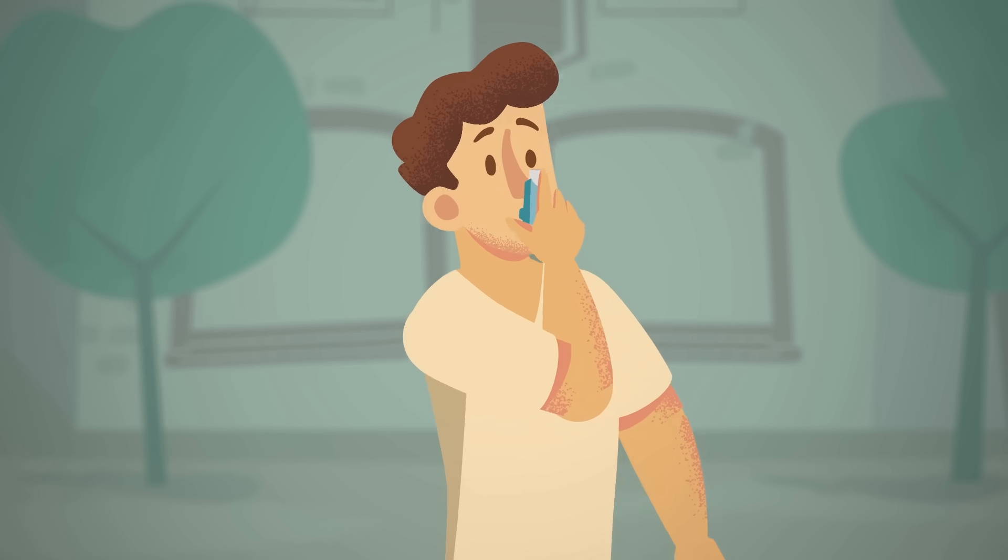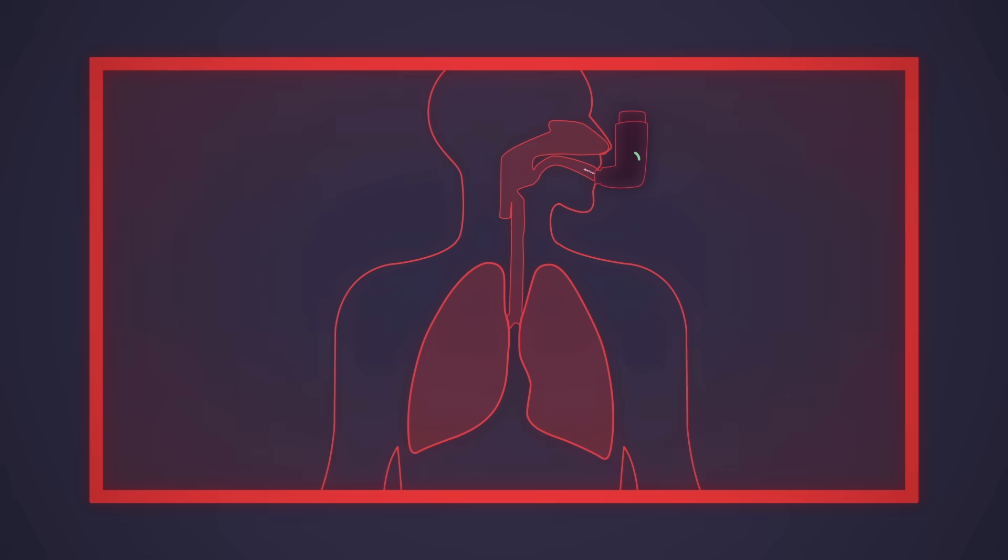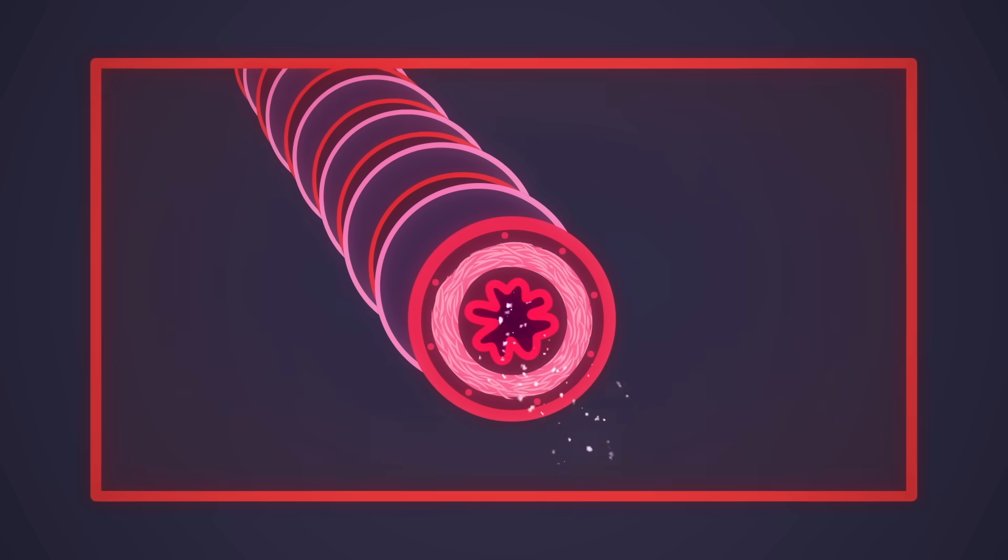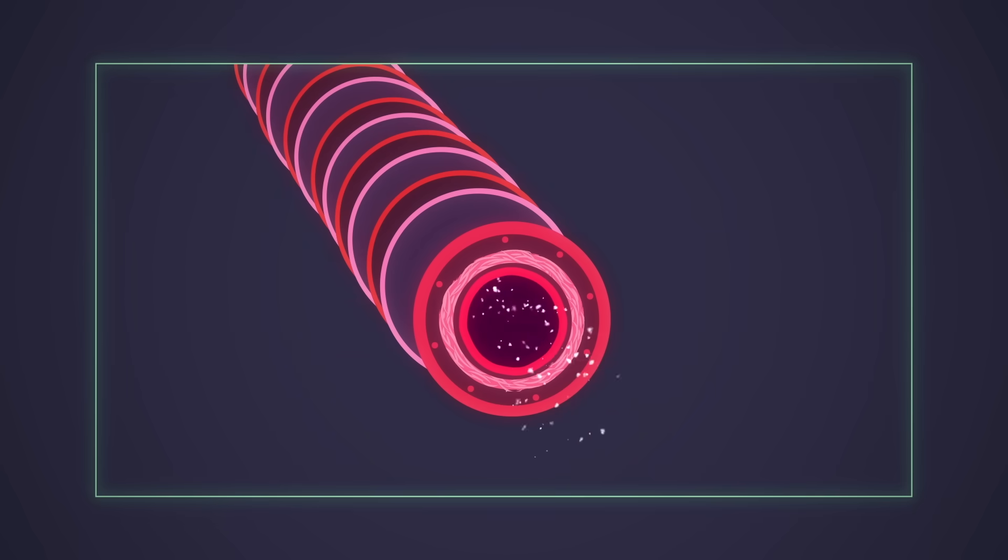There are reliever medications, which treat symptoms immediately and contain beta agonists. Beta agonists relax constricted muscles, allowing the airways to widen so more air can travel into and out of the lungs.